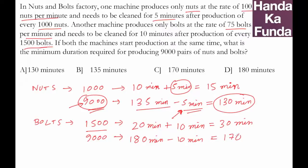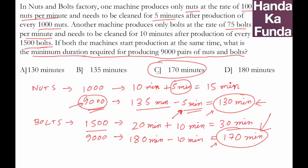Now what will be our answer? Will it be 130, will it be 170? We are required to find out the minimum duration required for producing 9000 pairs of nuts and bolts. So we need to make nuts also, we need to make bolts also. In 130 minutes we can make 9000 nuts but we cannot make 9000 bolts. So we will take the higher of the two values which is 170, and our answer will become option C. Thank you.